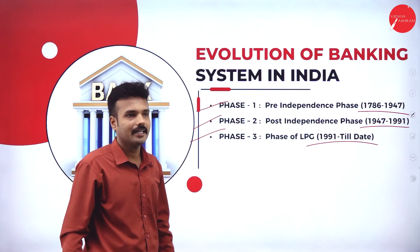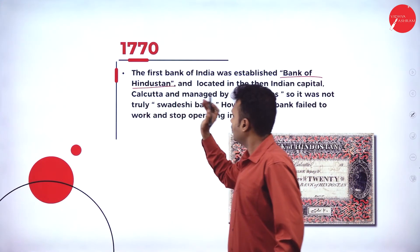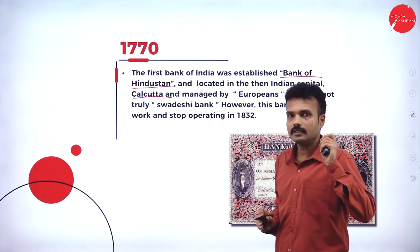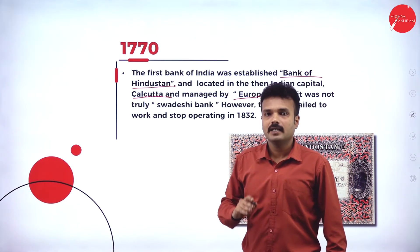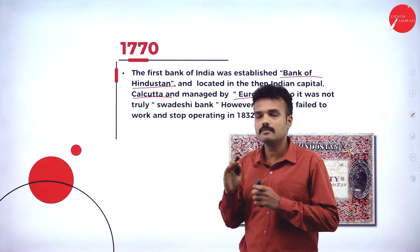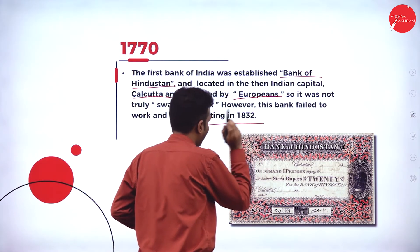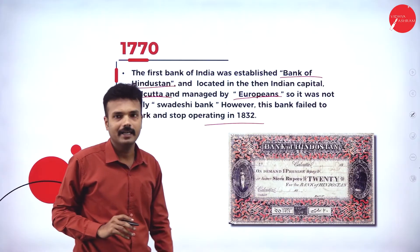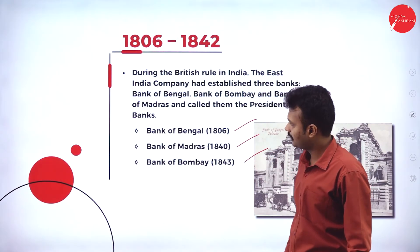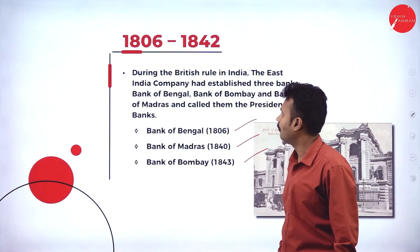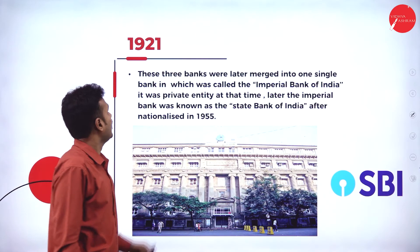In 1770, the first Indian bank was established — the Bank of Hindustan — in Calcutta, which was the capital of India at that time. It was established by Europeans, so it was not a purely Swadeshi bank. Later, due to some problems, that bank was closed. Between 1806 and 1842, three banks were established in India: the Bank of Bengal, Bank of Madras, and Bank of Bombay — all established by charter of the East India Company.